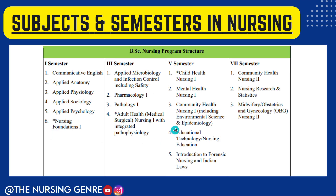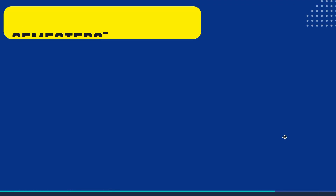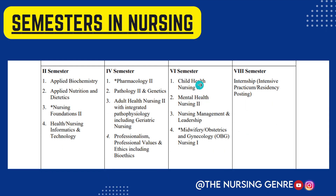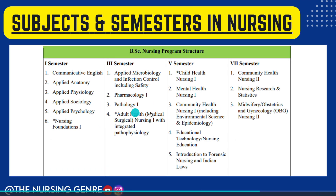Next, third year, which is fifth semester. Subjects are Child Health Nursing 1, Mental Health Nursing 1, Community Health Nursing 1, Educational Technology or Nursing Education, and Introduction to Forensic Nursing and Indian Laws. Sixth semester subjects are Child Health Nursing 2, Mental Health Nursing 2, Nursing Management and Leadership, and Midwifery and Obstetrics and Gynecology Nursing 1. Fifth and sixth semester complete third year.